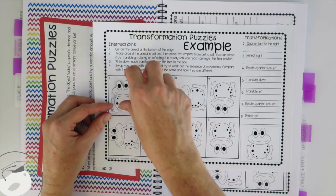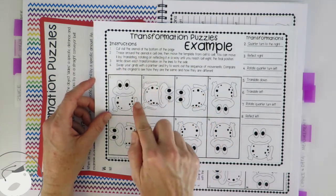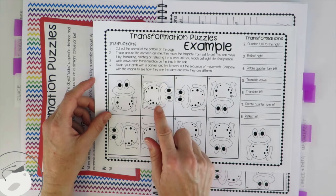So in this instance we're going to turn it a quarter turn to the right and I'm going to trace around it.